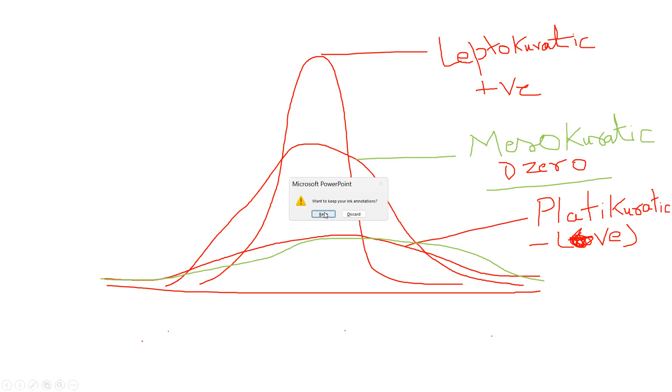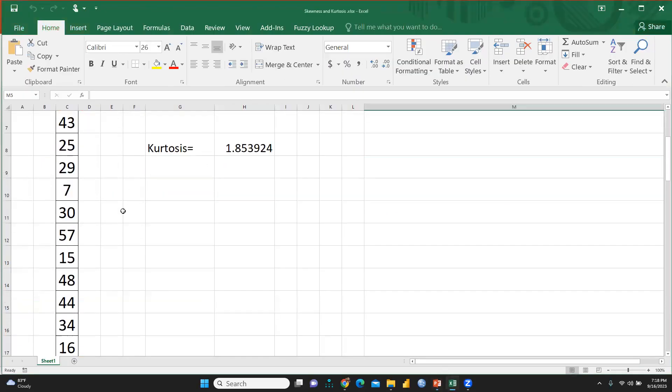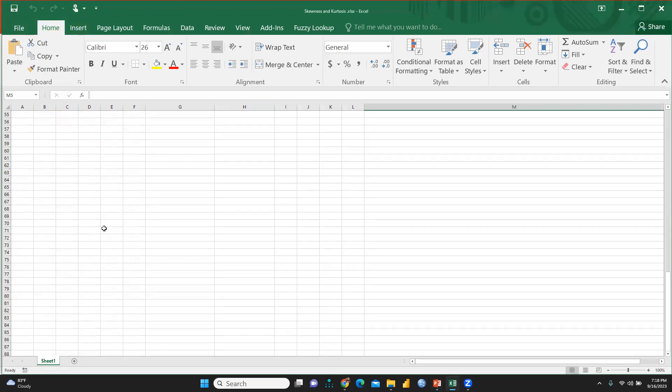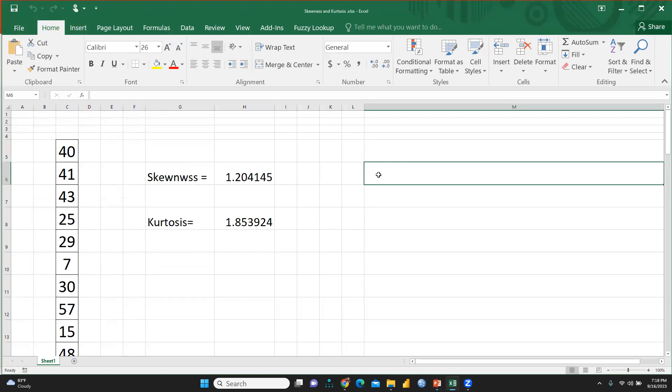So, I hope you understand and let me share my excel sheet. And I have taken this data set, you can see from starting from 42 and this is the last data entry is 25. I just want to check skewness.